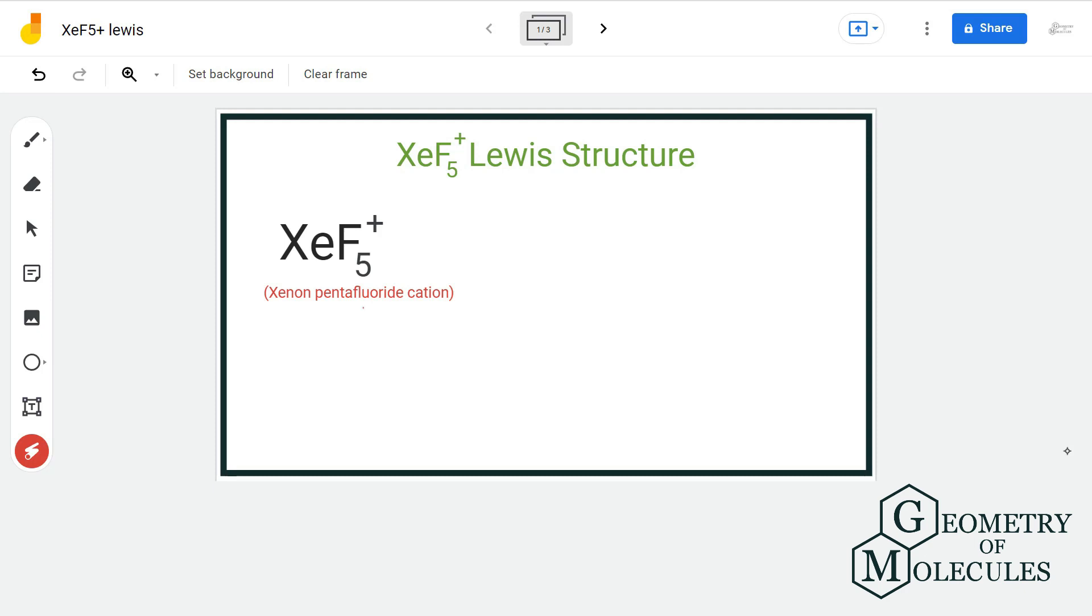it does form fluorides and that is because of the highly reactive nature of fluorine. One example is XeF5+ ion that we will discuss in this video.